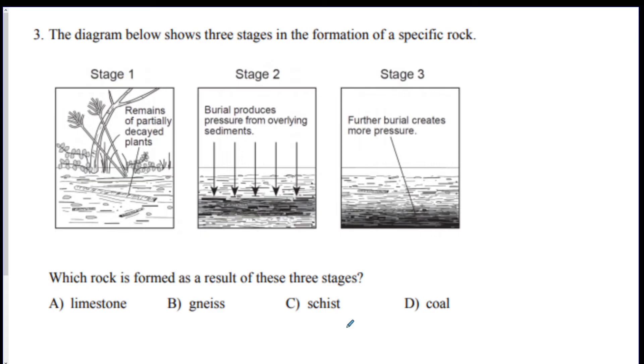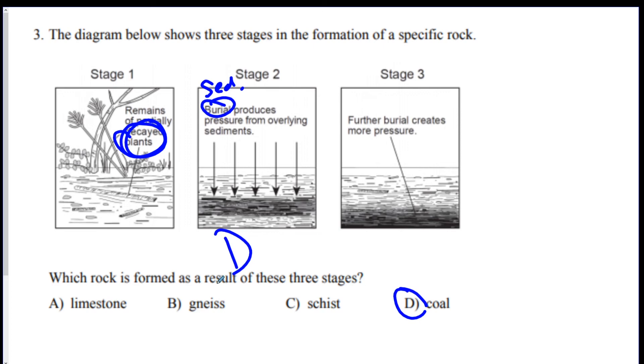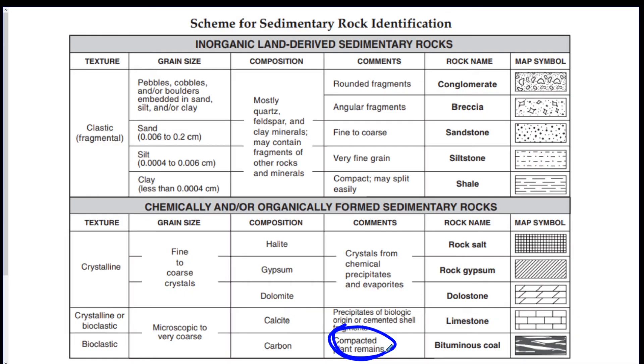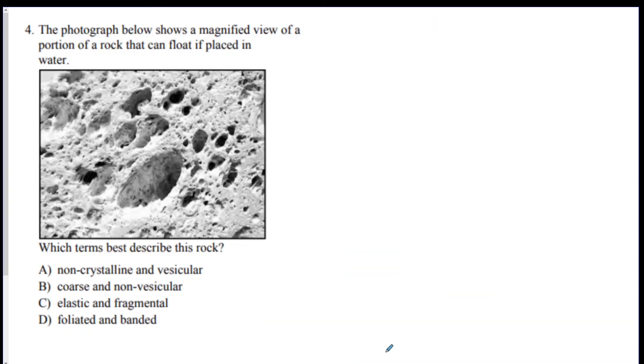Number three, which rock formed as a result of these three stages? I'm seeing burial. That's a sedimentary rock process, according to the rock cycle chart on page six. Decayed plants. We talked about that. It's on the sedimentary rock chart, and decayed plants creates coal. D. It's right down here. Compacted plant remains. Compacted means to push down, and that's what these pictures were showing.